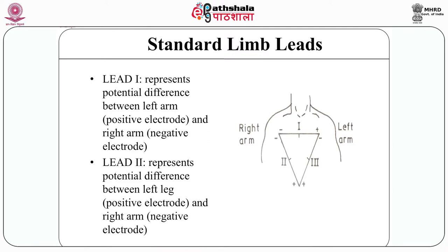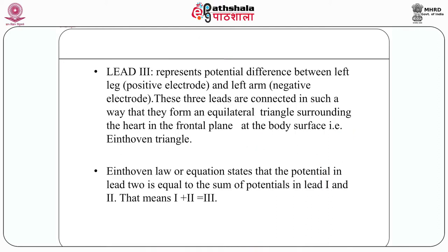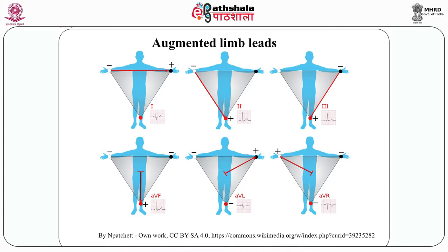First, the standard limb leads. Lead 1 represents the potential difference between the left arm (positive electrode) and the right arm (negative electrode). Lead 2 represents the potential difference between the left leg (positive) and the right arm (negative). Lead 3 represents the potential difference between the left leg and the left arm. These three leads are connected to form an equilateral triangle surrounding the heart in the frontal plane, called the Einthoven triangle. Einthoven's law states that the potential in lead 2 equals the sum of potentials in leads 1 and 3. In figure 3, the Einthoven triangle is shown in panel A; in panel B, the three lead axes are rearranged to cross a central point; and in panel C, a QRS vector is drawn with its projection on the standard limb leads.